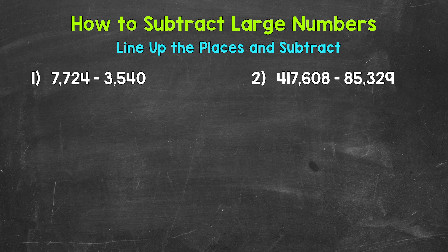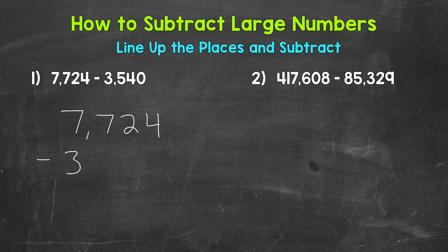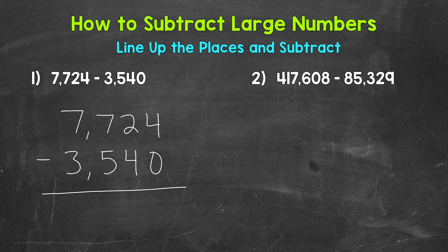Let's jump into number one where we have 7,724 minus 3,540. The first thing that we need to do is set this problem up. So 7,724 minus 3,540. Now when we set up a subtraction problem, we need to line up the places.